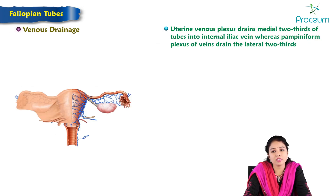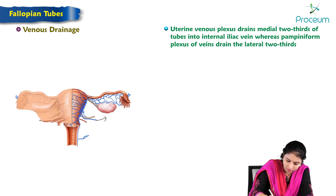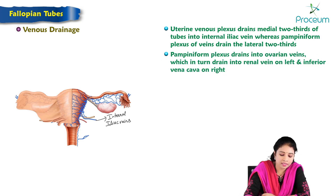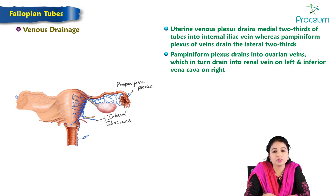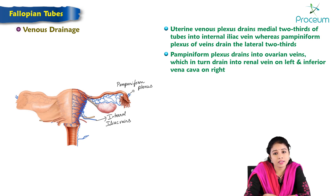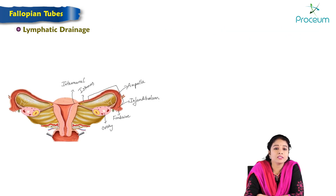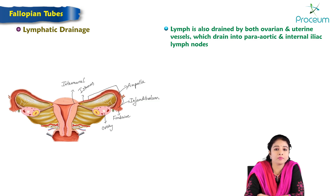For venous drainage, the uterine venous plexus drains the medial two-thirds of the tube, whereas the pampiniform plexus of veins drains the lateral one-third. The pampiniform plexus drains into the ovarian veins, which in turn drain into the renal vein on the left side and the inferior vena cava on the right. Lymph is also drained by both ovarian and uterine vessels, which drain into the para-aortic and internal iliac lymph nodes.